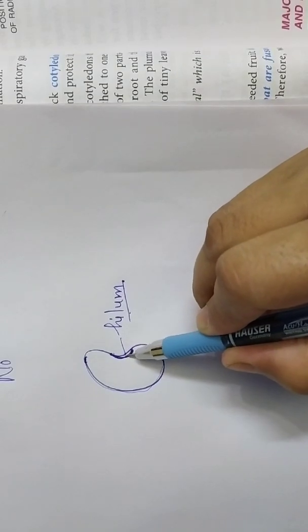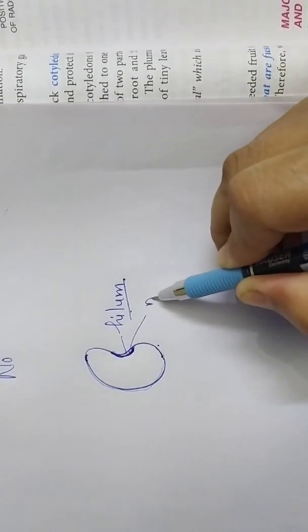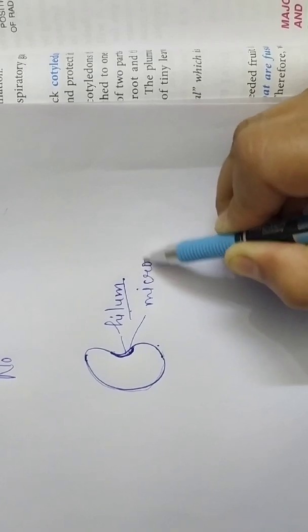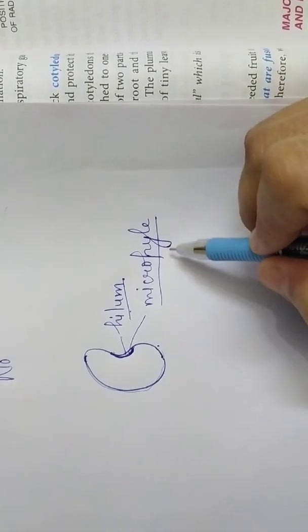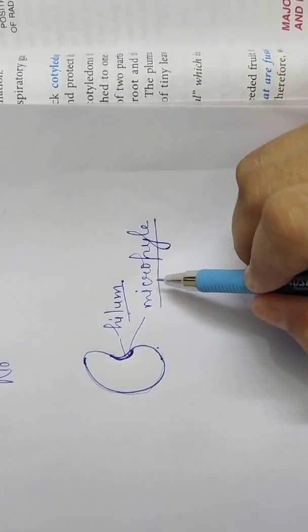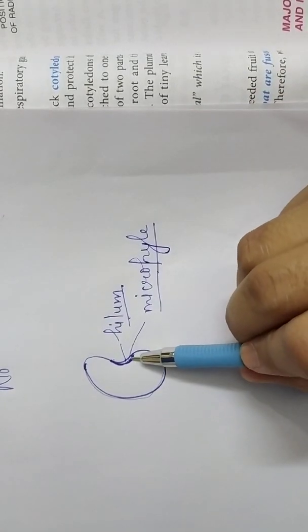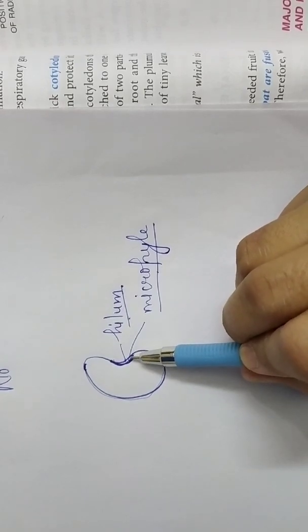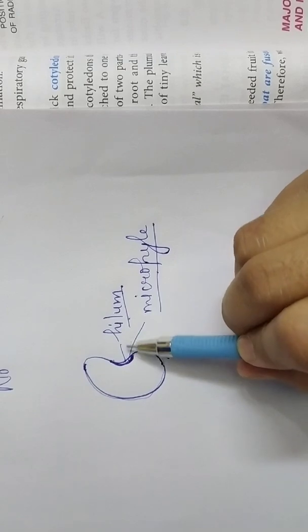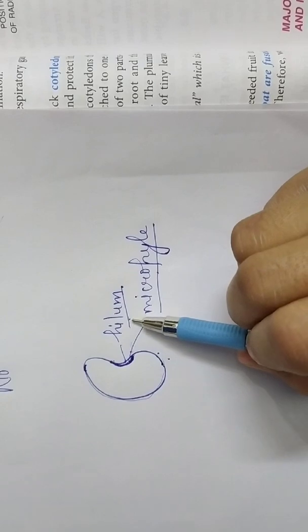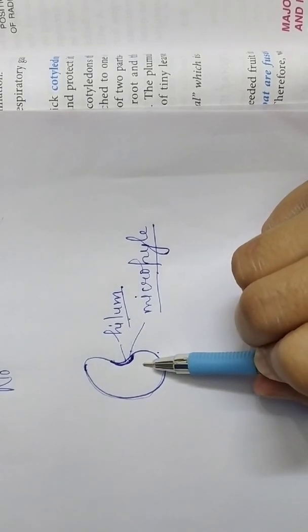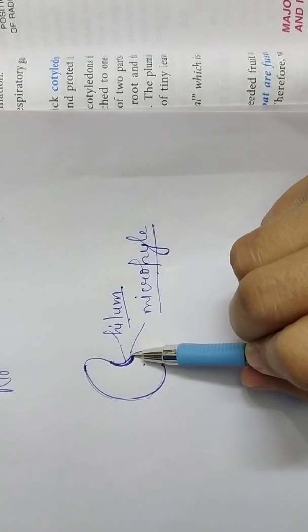And just next to the hilum we have a pore, micropyle. If you remember micropyle, the pore in the ovule from where the pollen tube makes way, enters. That same micropyle, the hole which still persists. And this micropyle helps to absorb water. From here the seed absorbs water and it also helps in the exchange of gases, means to take oxygen or liberate carbon dioxide during respiration from this pore.